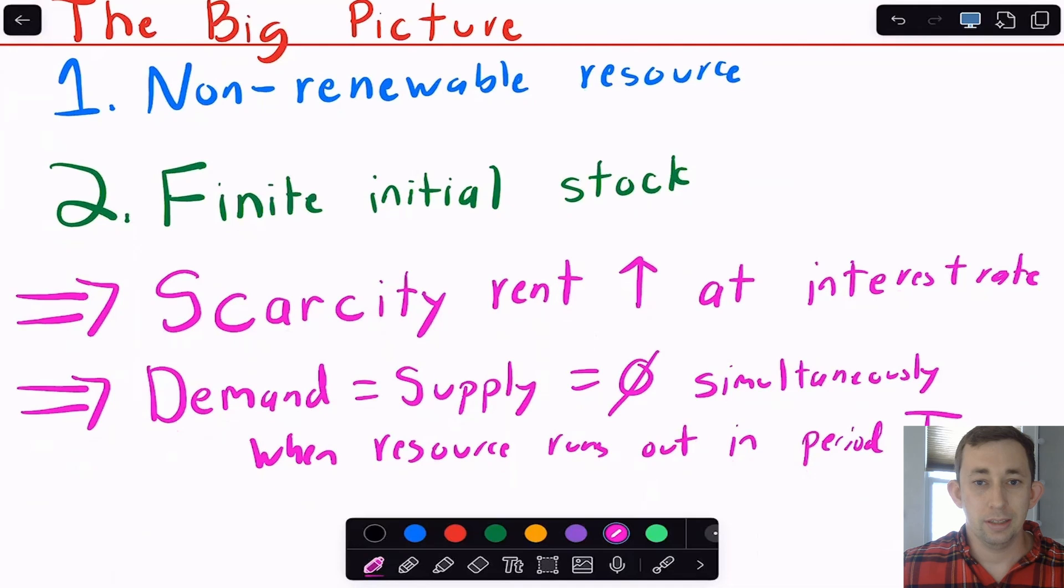is saying that whatever sort of market you're in, the scarcity rent is going to increase at the interest rate. And one thing that comes out of that rule is that demand and supply are both zero simultaneously exactly when we run out of this finite resource in year T.